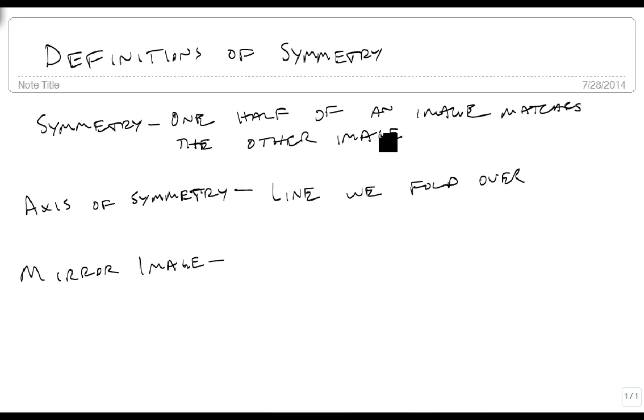Mirror image is just another word for the half that we're talking about. And so we say that two halves are mirror images of each other if they're identical over some axis of symmetry.